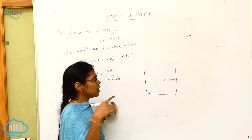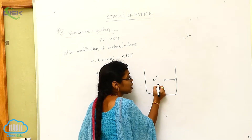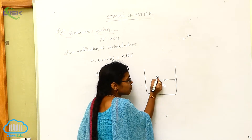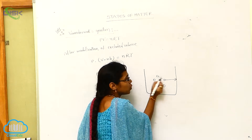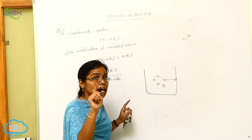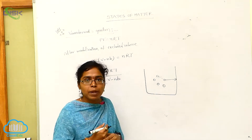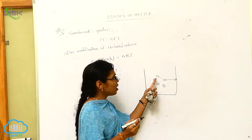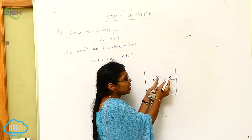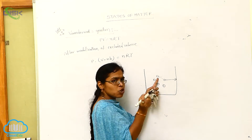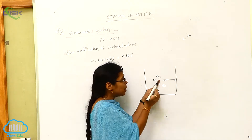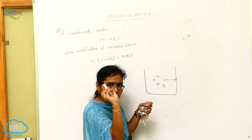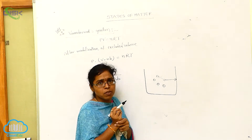But in the container, there are a number of molecules present. If one molecule collides with another molecule, in that situation, a reduction of pressure takes place. Why? Because if a molecule directly collides with the wall of the container, there should be an increase in pressure. But actually, when molecules collide with each other, some reduction of pressure takes place.